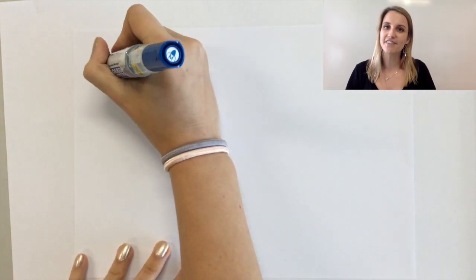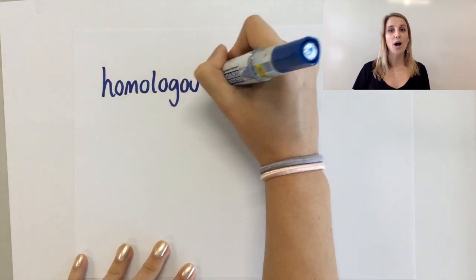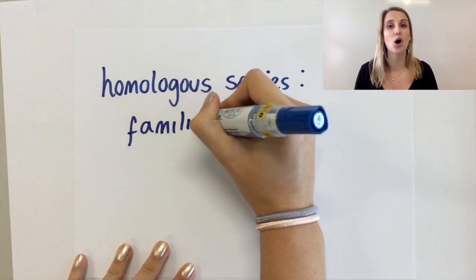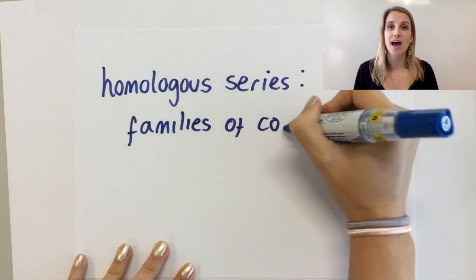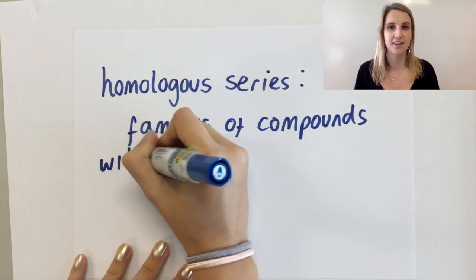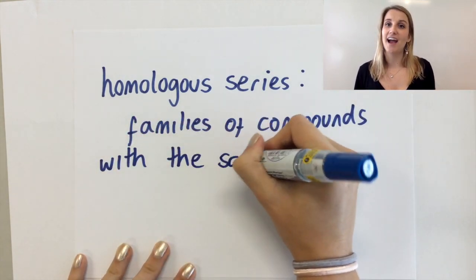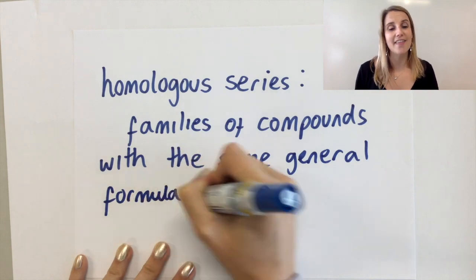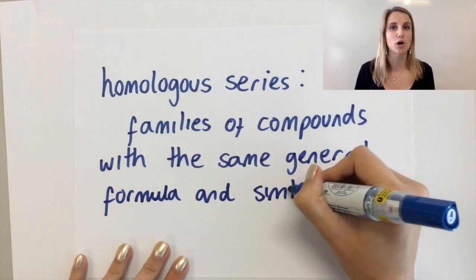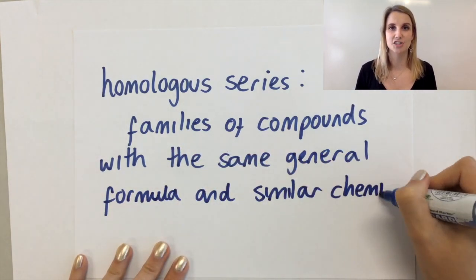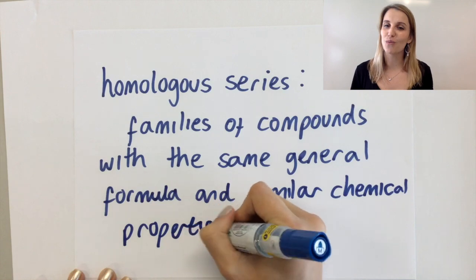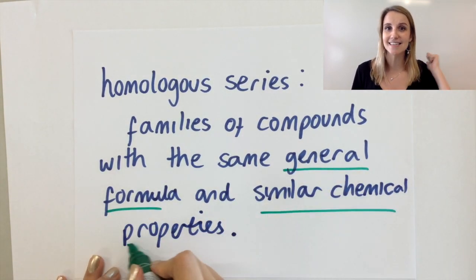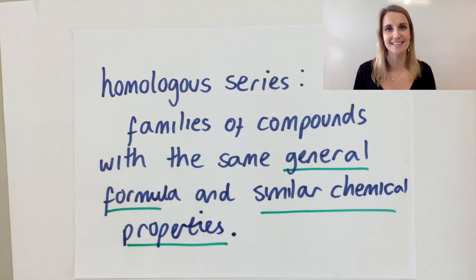Let's do our definitions first. A homologous series is a family of compounds and they have two defining features: they have the same general formula and they also have similar chemical properties to each other. We're going to look at what that means in the context of alkanes and alkenes today.